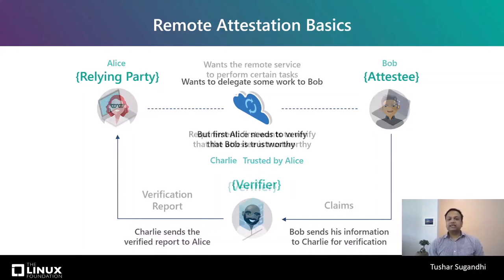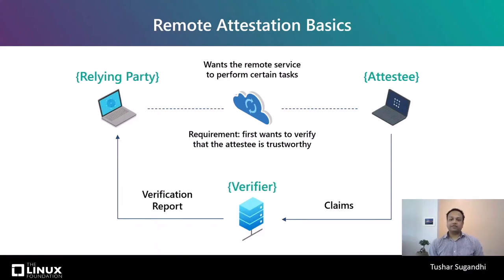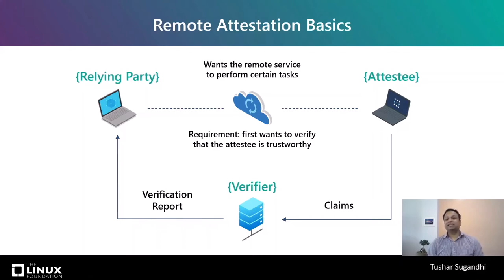When we translate this analogy to a network of systems, we have one system which is a relying party and wants the remote service or system to perform certain tasks. The relying party wants the remote system to get attested first before entrusting it with business-critical data or tasks, and it relies on the verifier to do the attestation. The attestee sends its set of claims to the verifier, and the verifier verifies the claims and sends the verification report to the relying party to indicate if the attestation has succeeded or not.